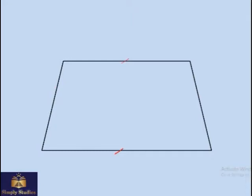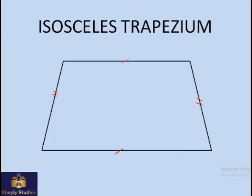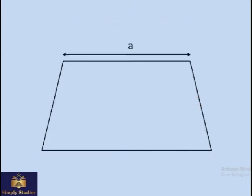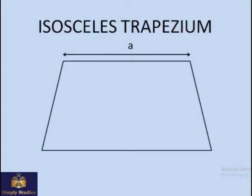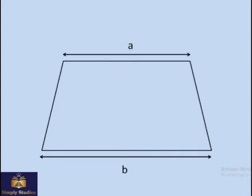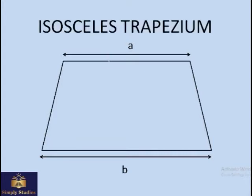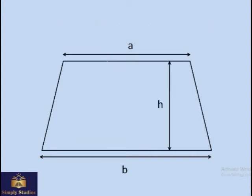And the other two lines are equal in length, so what we get here is known as an isosceles trapezium. In an isosceles trapezium, if the top length is a and the bottom is b and the height is h.